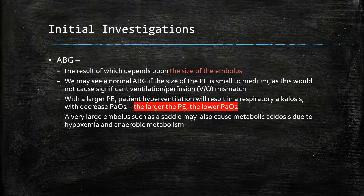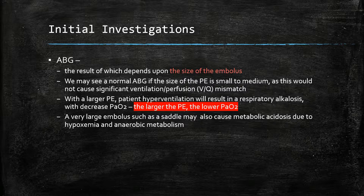With initial investigations, we start off with the ABG, the result of which depends on the size of the embolus. The ABG may be normal if the size of the PE is small to medium, as this would not cause significant V/Q mismatch. However, as the size of the PE increases, patient hyperventilation will result in a respiratory alkalosis. The larger the PE, the lower the PaO2. A very large embolus such as a saddle embolus may also cause a metabolic acidosis due to hypoxaemia and anaerobic metabolism.